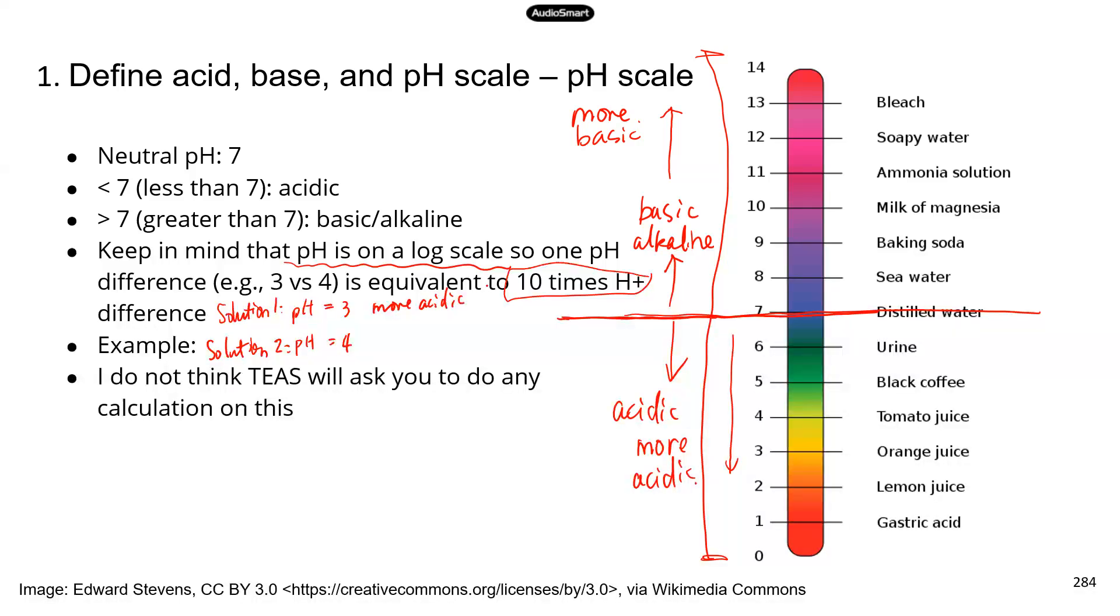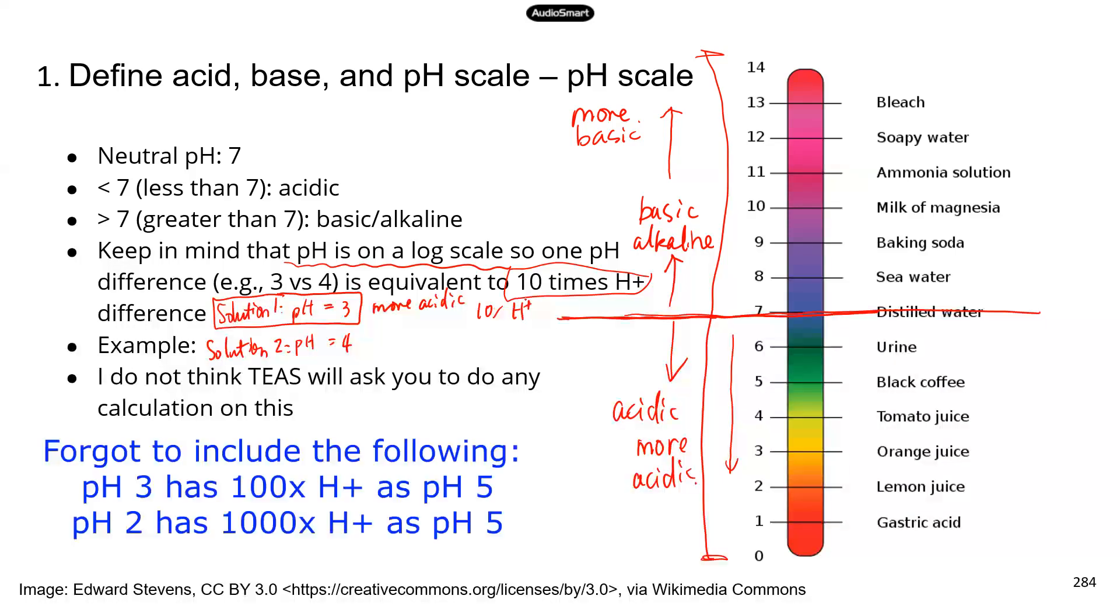Now something that's more acidic has more hydrogen ions, a higher concentration of hydrogen ion. So what's the difference between these two solutions in terms of hydrogen ion concentration? Solution one that has a pH of 3 is going to have 10 times more hydrogen ion than solution two. And again, that number difference, one, translates to 10 times difference in hydrogen ion concentration.